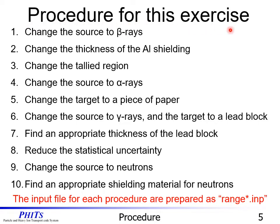The procedure for this exercise is as follows: Step 1, change the source to beta rays. Step 2, change the thickness of the aluminum shielding. Step 3, change the tallied region. Step 4, change the source to alpha rays. Step 5, change the target to a piece of paper. Step 6, change the source to gamma rays and the target to a lead block. Step 7, find an appropriate thickness of the lead block. Step 8, reduce the statistical uncertainty. Step 9, change the source to neutrons. Step 10, find an appropriate shielding material for neutrons. The input file for each procedure is prepared as range*.inp.